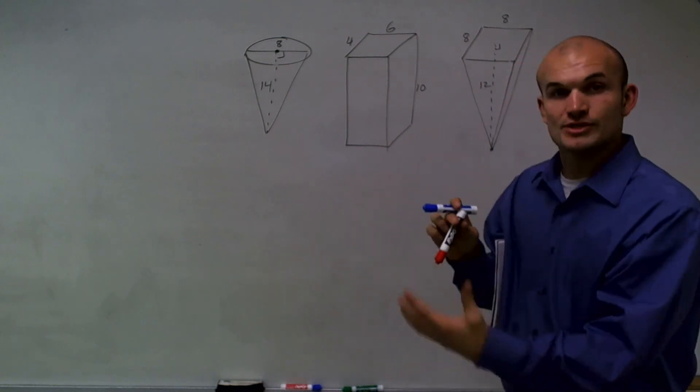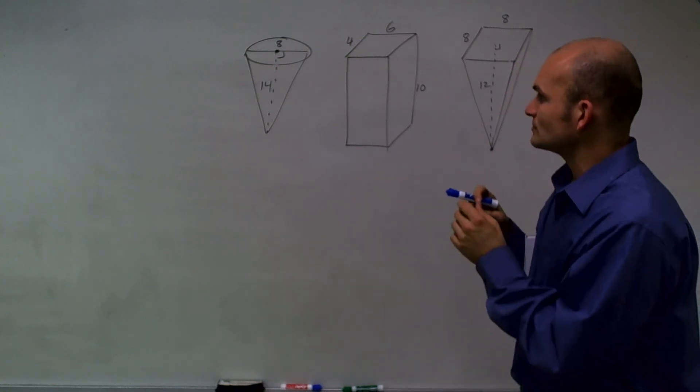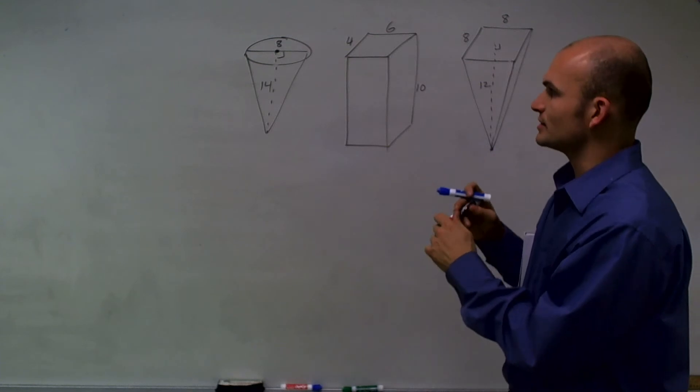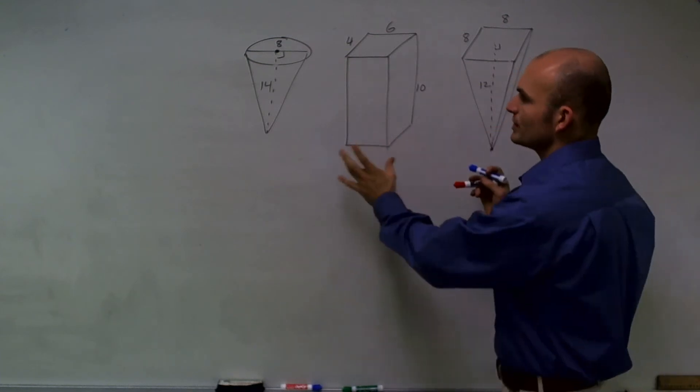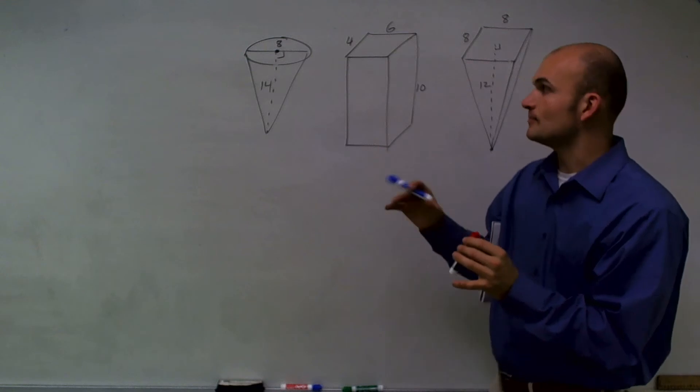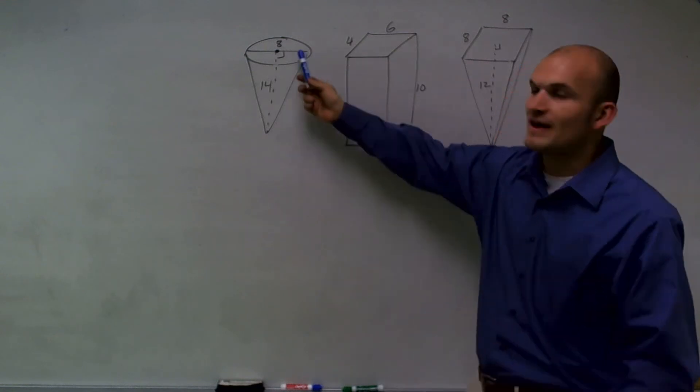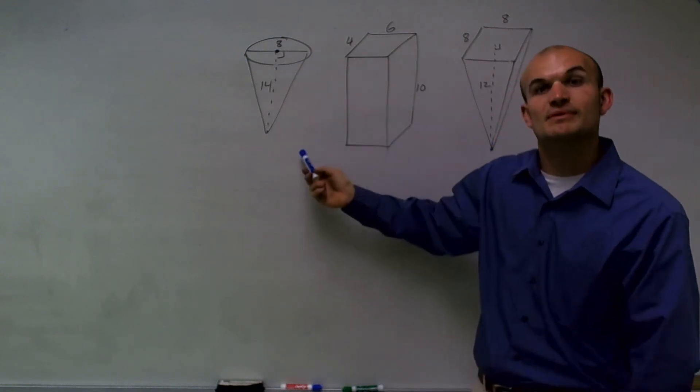When you're trying to find the volume of these, they're what we call prisms. When you're trying to find the volume of a prism, you find the area of the base, and that's going to be multiplied by the height.